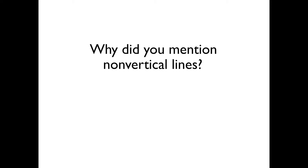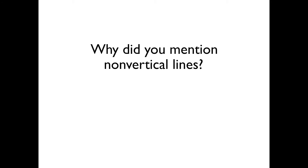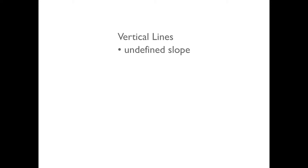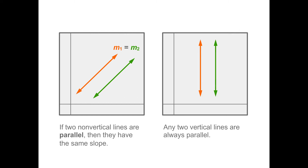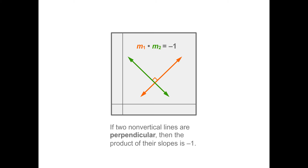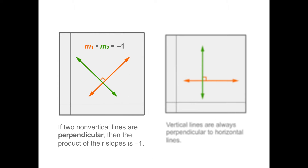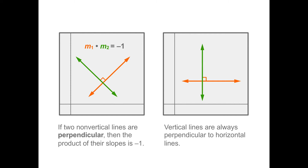Why did you mention non-vertical lines? We must exclude vertical lines because the slope of a vertical line is undefined; therefore, there is no value for that slope. If two non-vertical lines are parallel, then they have the same slope. We can also add that any two vertical lines are always parallel. For two non-vertical lines to be perpendicular, the product of their slopes must be negative 1. Vertical lines are always perpendicular to horizontal lines.